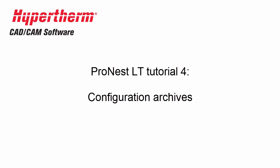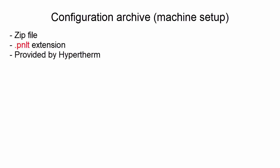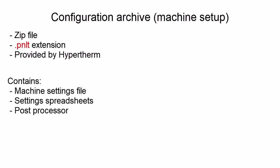In this video, we'll discuss configuration archives. During the purchasing process, we're going to need to find out information about your cutting machine. Hypertherm will then use that information to create machine-specific settings for you. This is called your machine setup or configuration archive. The machine setup is a .zip file that has a .pnlt file extension, and it contains a collection of settings files specific to your machine. It includes things like cutting parameters, such as cut speeds or feed rates, curve compensation values, and so on. It also includes the post-processor file, which enables ProNest to create G-code that's readable by your specific cutting machine.